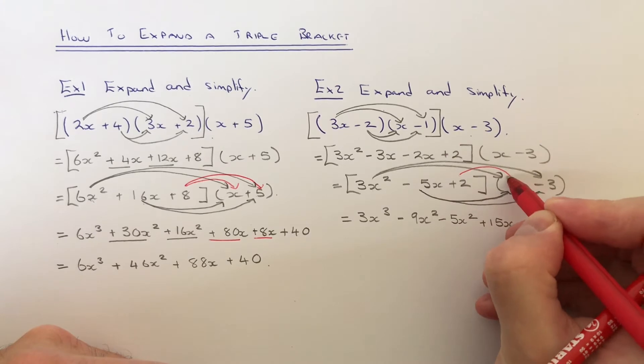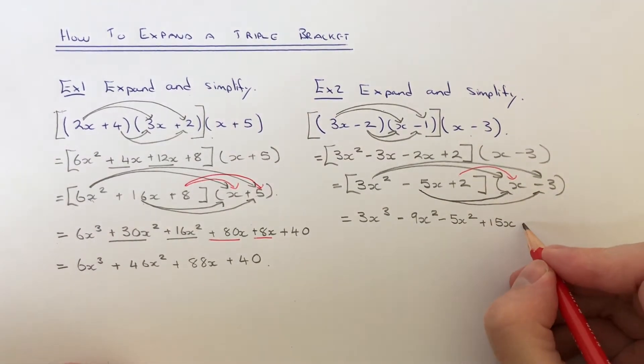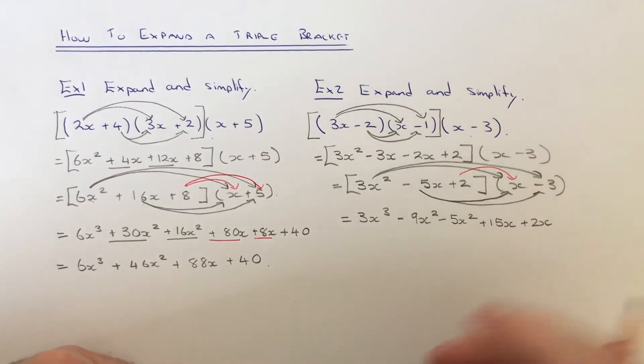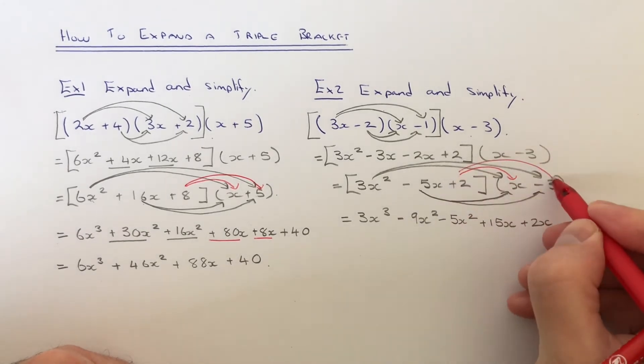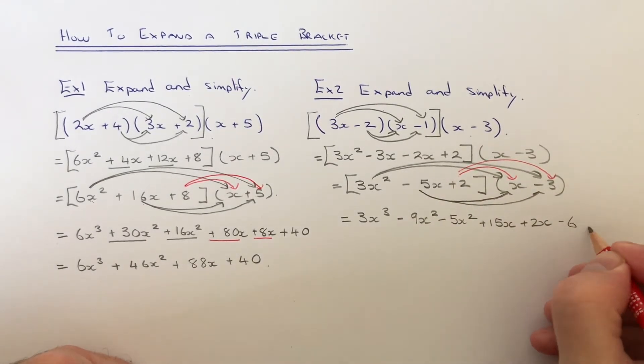Let's move to the 2. So 2 times x is 2x, and 2 times minus 3 is minus 6.